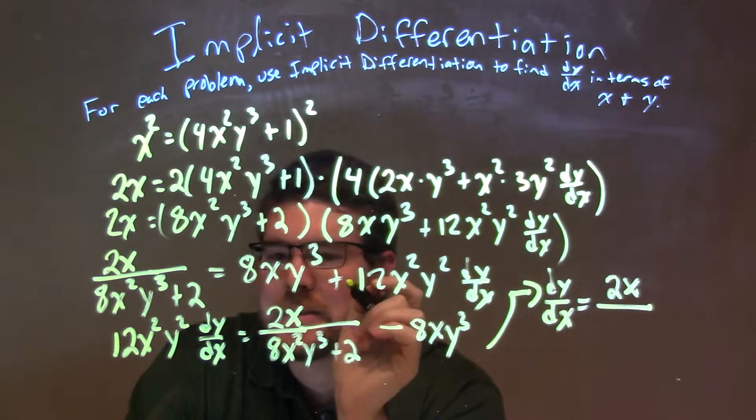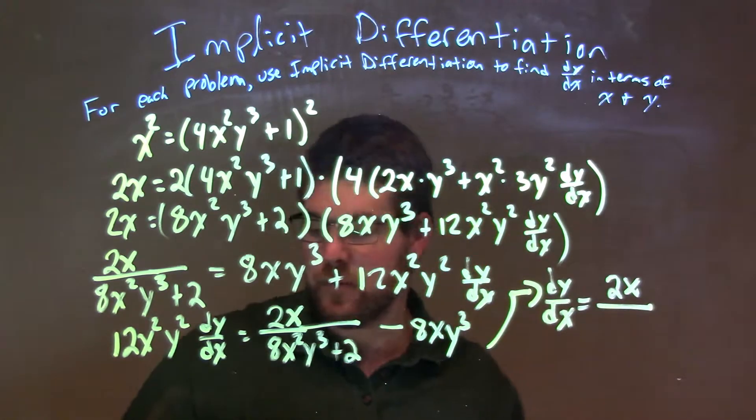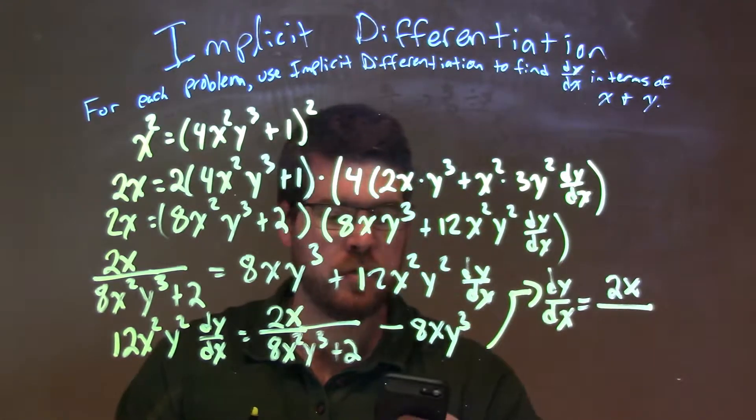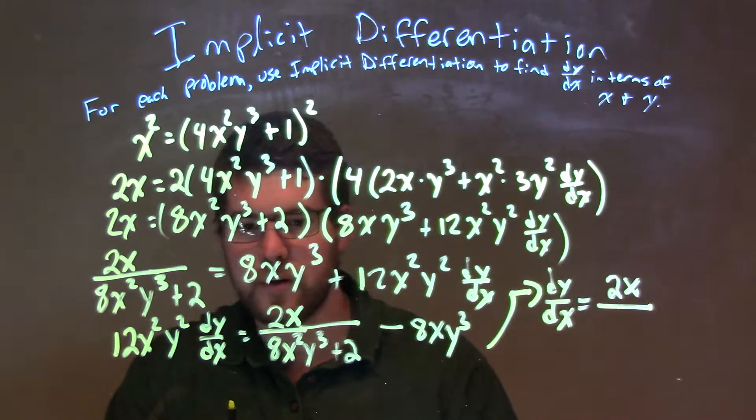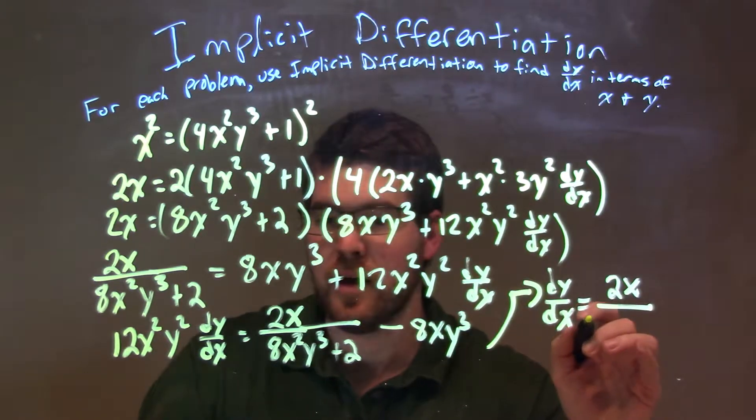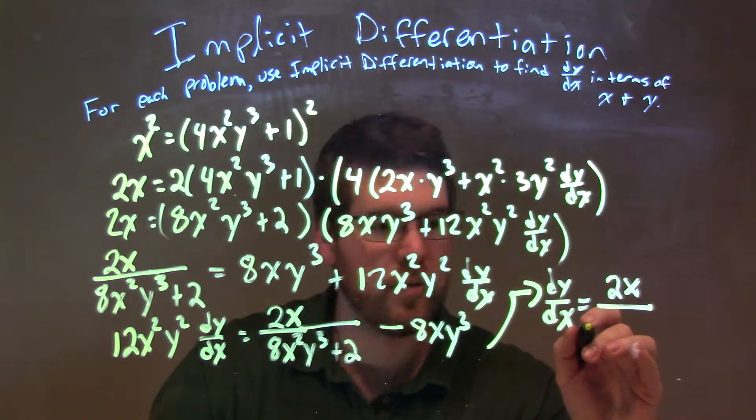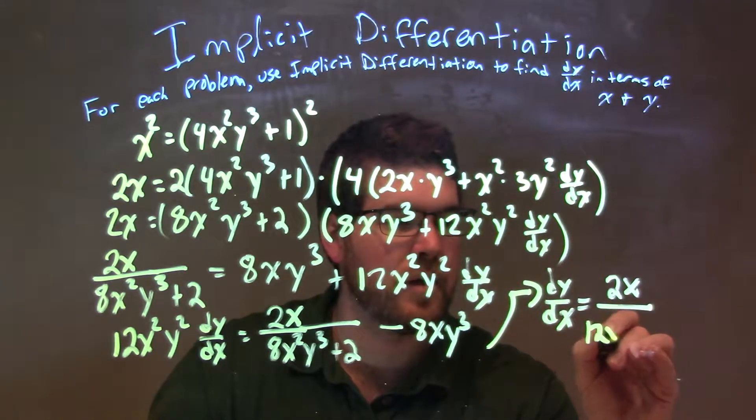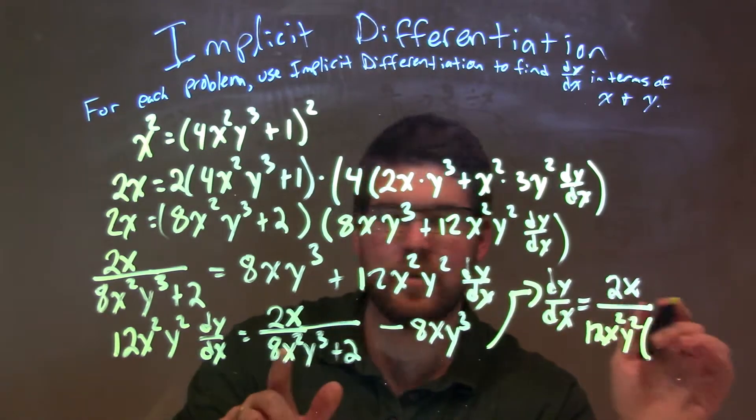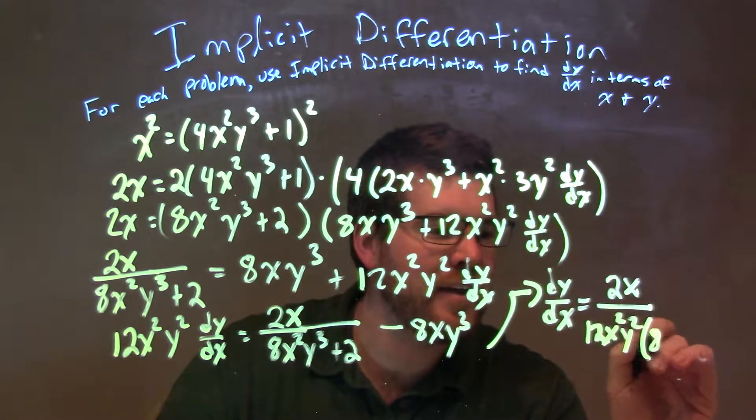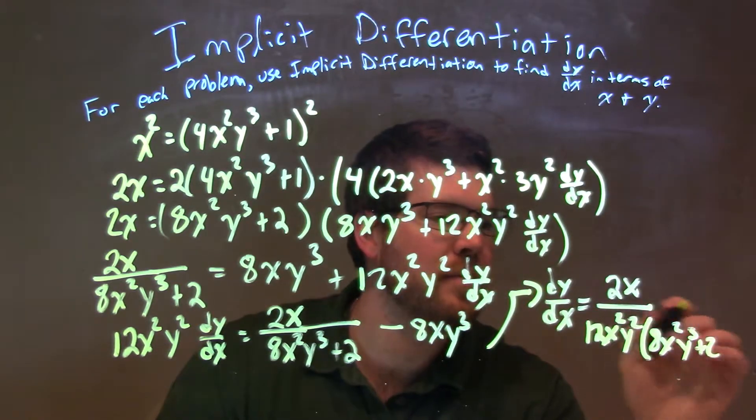12 times 8, let me check my calculator, 12 times 8 gives a coefficient out front here. Actually, let's just do it like this, make it easier, not distributing that across. So we have 12x squared y squared times what's left in the denominator: 8x squared y to the third plus 2.